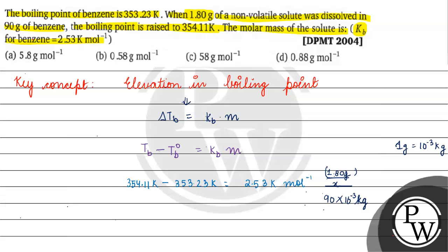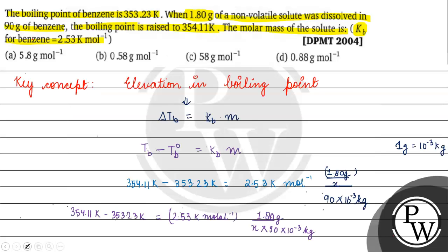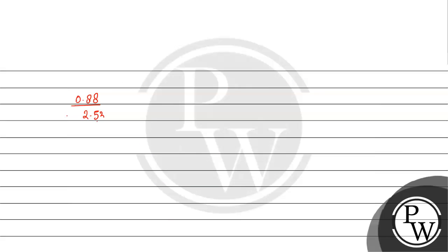Now when we solve this, we have to solve it. 354.11 kelvin minus 353.23 kelvin equals 2.53 kelvin. Mass of solute is 1.80 grams. If we want to find x, we will solve it. This will be subtracted. 0.88 will be divided by 2.53 kelvin molar inverse.